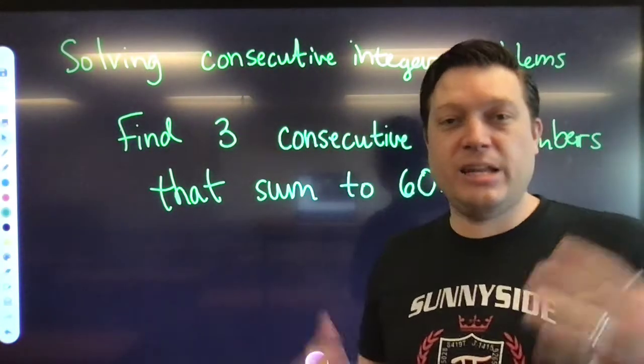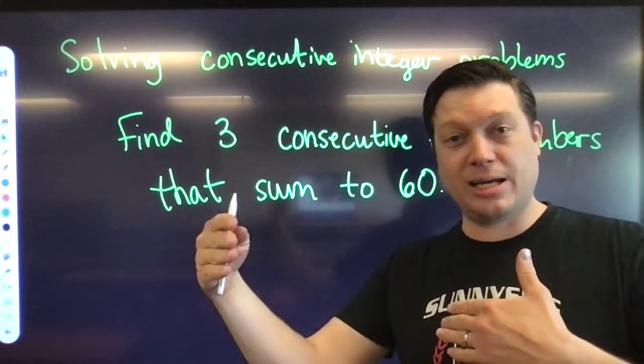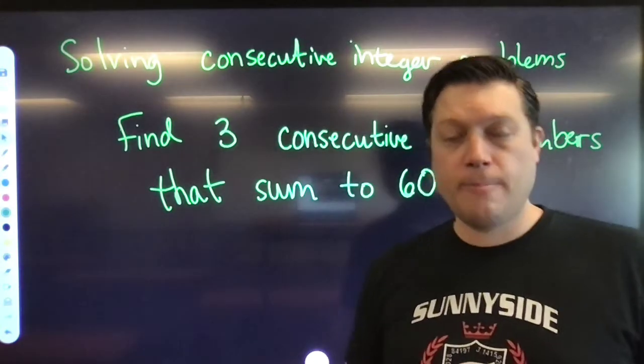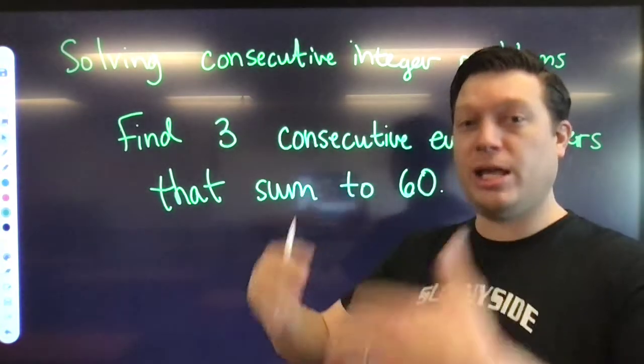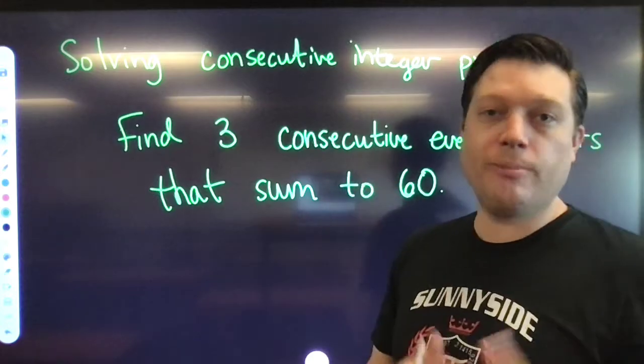When we talk about a consecutive integer, we're talking about numbers that are repeated like next to each other, like 3, 4, 5. Those are three numbers that are following each other in a row, therefore we call them consecutive integers.